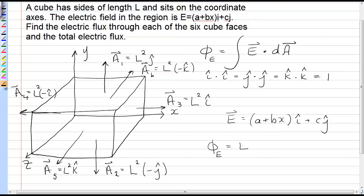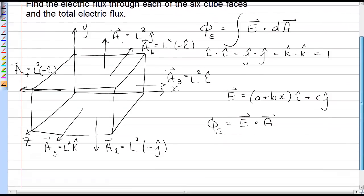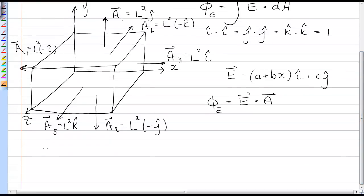Which means to calculate the electric flux, we simply have to dot the electric field vector with the area vector for each face. So let's go ahead and do that for each of these faces, starting with face 1.